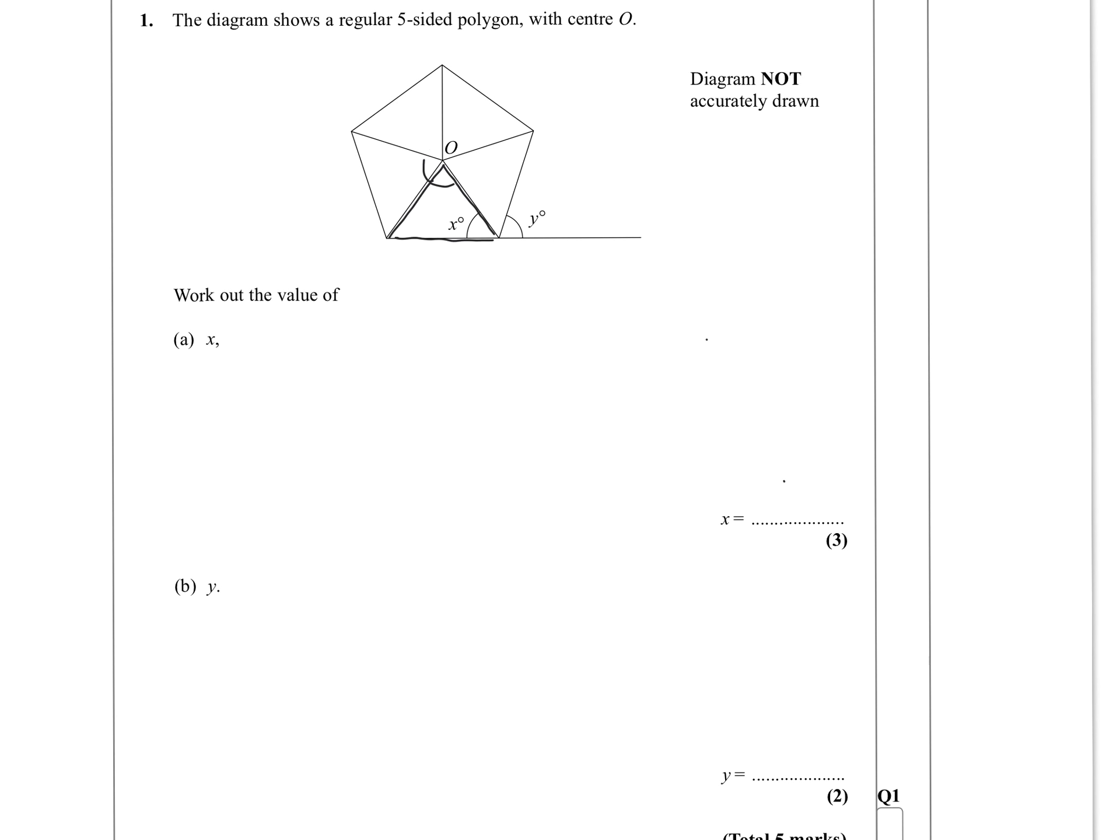So all the way around the point O, there are 360 degrees. So if we call this angle P, P equals 360 divided by 5. So that means there's 72 degrees.